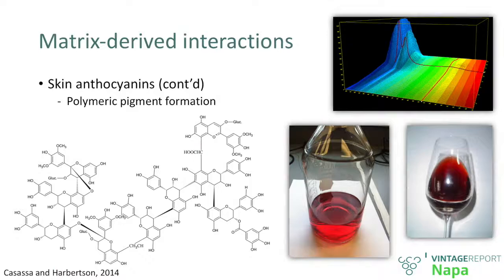Polymeric pigments are essentially covalent. First and foremost, they are winemaking artifacts — they are the product of cell disruption. They don't appear at the skin or seed level. They are formed once anthocyanins and tannins are released and put together via covalent reactions. They are mostly composed of tannins — this is why they have mostly absorbance at 280 nanometers — but they also have absorbance at 520, meaning that they have color. They are resistant to bisulfide bleaching and resistant to pH changes, so they provide stable color. From the perspective of sensory, they might be associated with polysaccharides and even fructose, so they may be responsible for mouthfeel modification during aging.